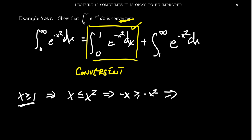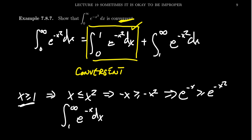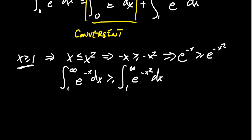And then if you take the exponential, we get e to the negative x is greater than or equal to e to the negative x squared. So what this tells us by comparing these two things, the integral from one to infinity of e to the negative x dx is going to be greater than or equal to the integral from one to infinity of e to the negative x squared dx.